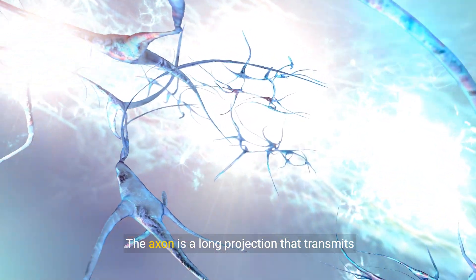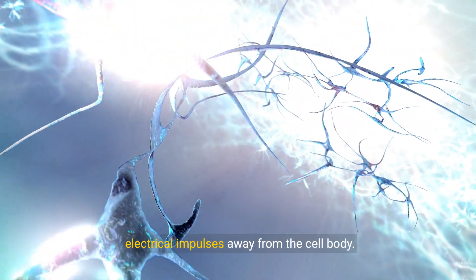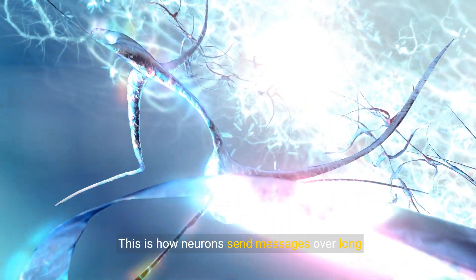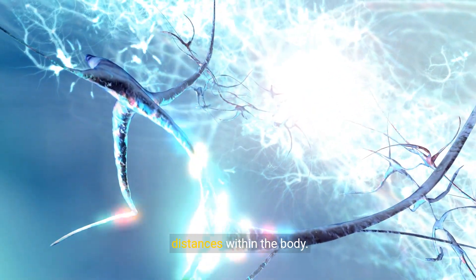The axon is a long projection that transmits electrical impulses away from the cell body. This is how neurons send messages over long distances within the body.